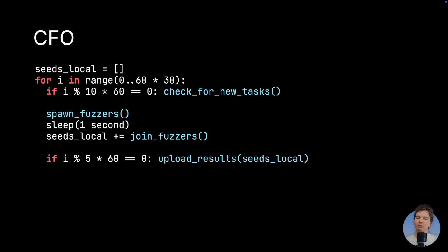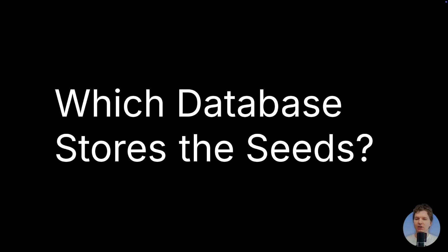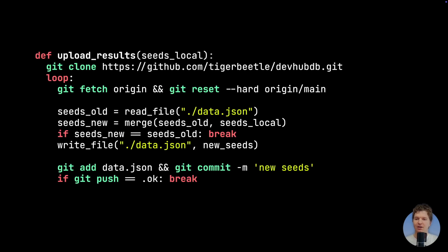The fun thing here is that no async programming is necessary — a simple polling loop that ticks every second does the job fine. So, now we are running this CFO loop on, say, 100 machines continuously. We need some sort of a distributed database to hold the discovered seeds. My favorite database, apart from TigerBeetle, is json-mutexdb. So I use a distributed OCC version of it: a JSON file in a git repository. We already have to use git to fetch the code, so we might as well reuse it as our database client. The logic is simple: clone the database repository, merge in the new seeds, commit the result, and retry in case of a merge conflict. And that's basically it.